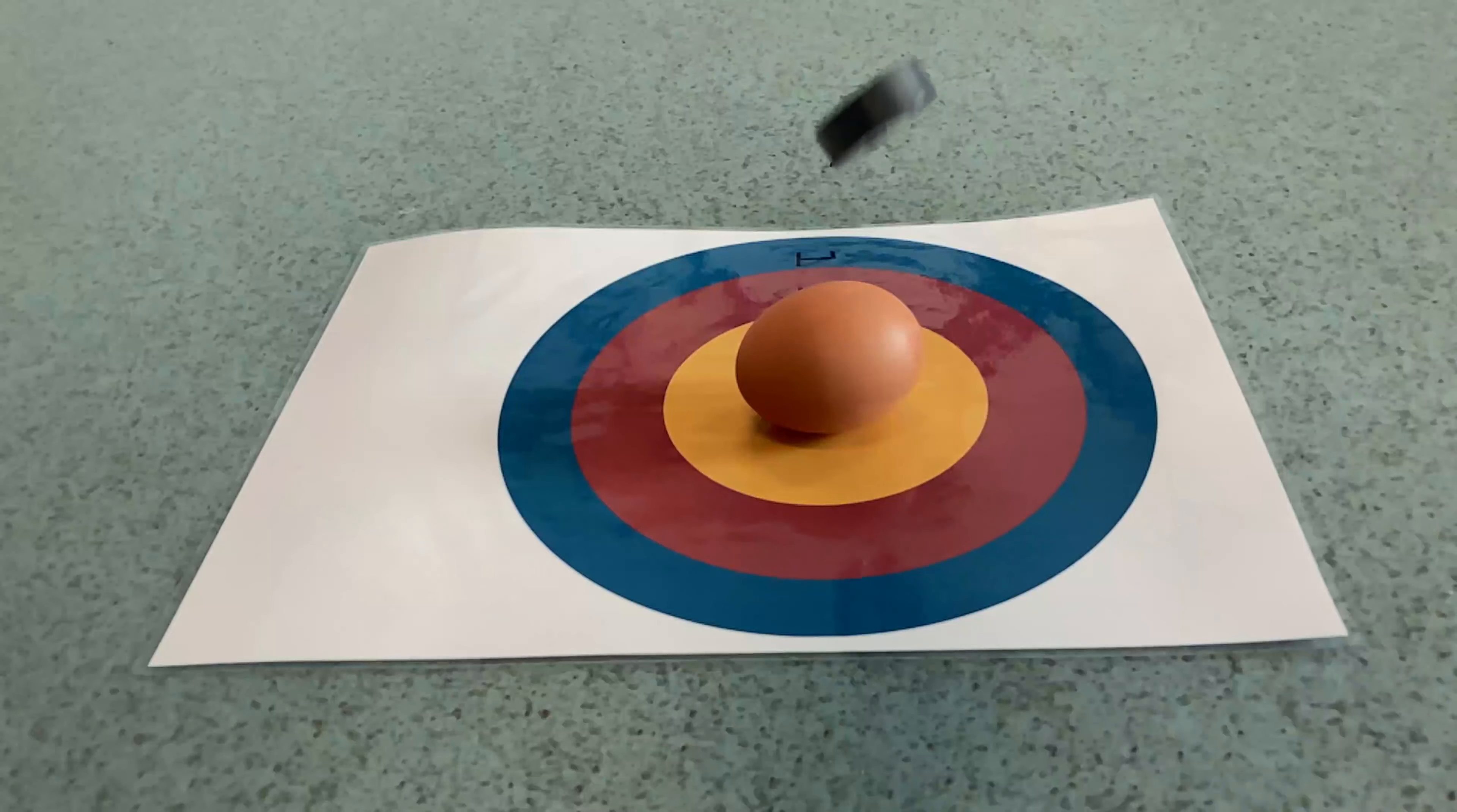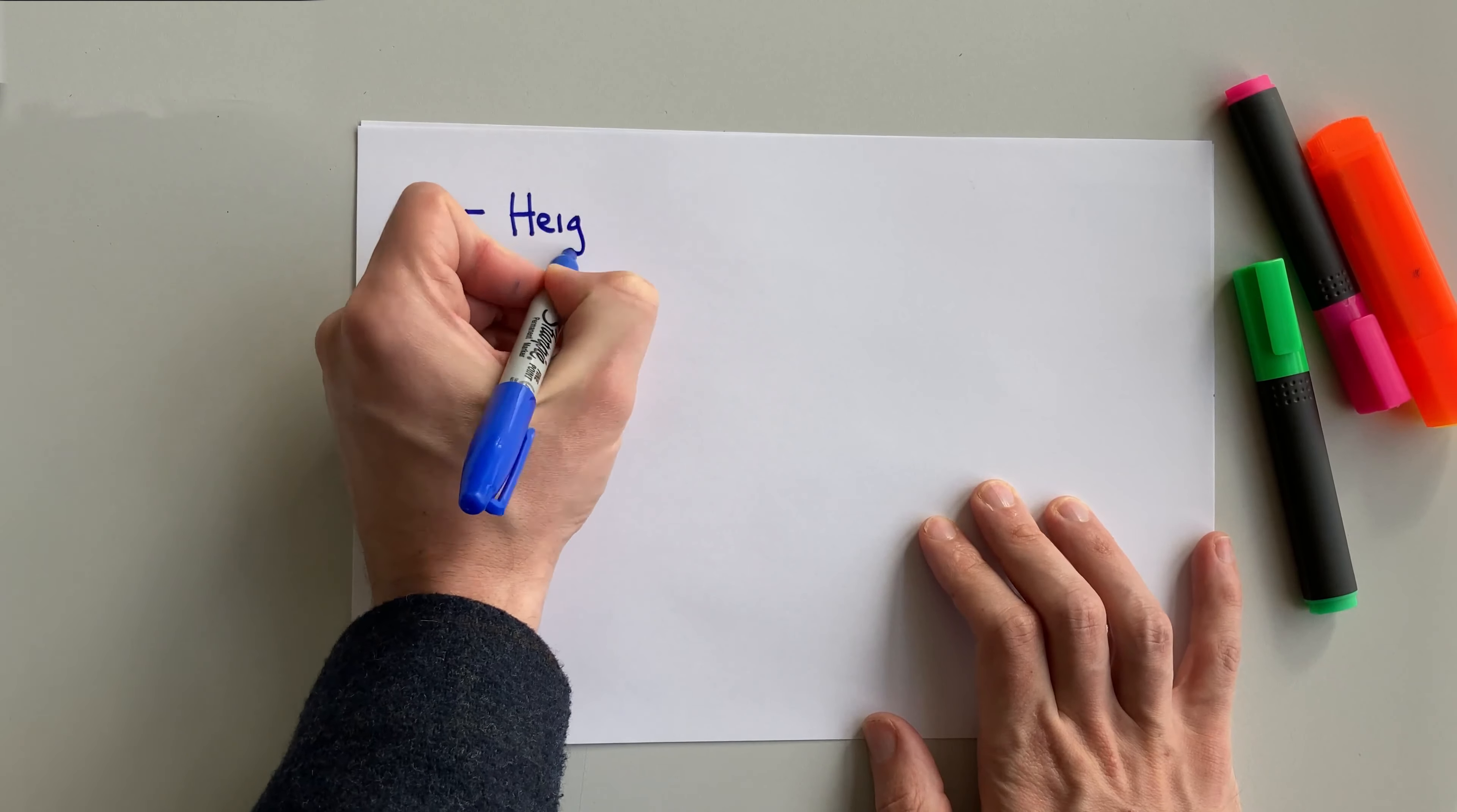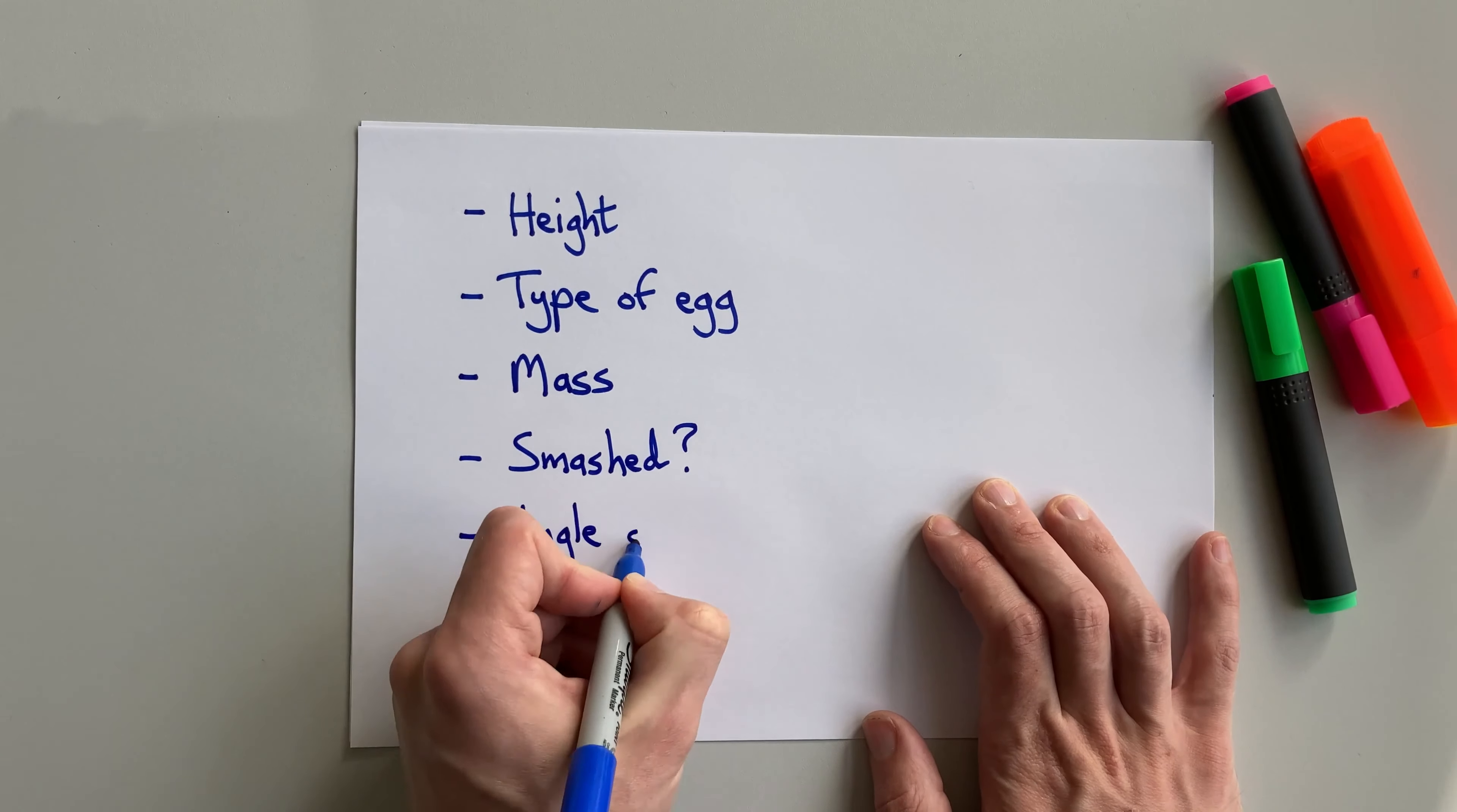You could even use different types of egg. Another word for change is variable, so all the things that can change in the experiment are called the variables. Here is a list of the variables for egg smashing.